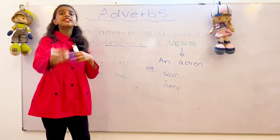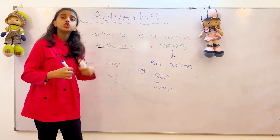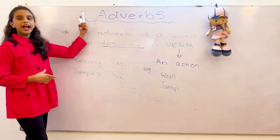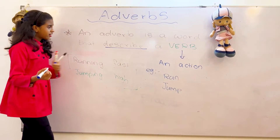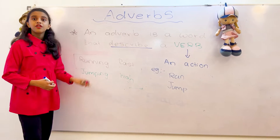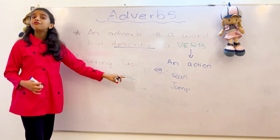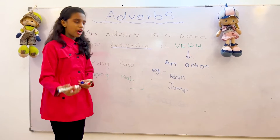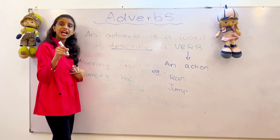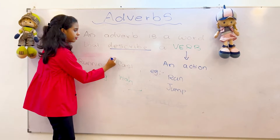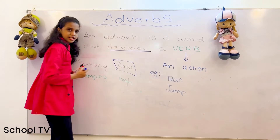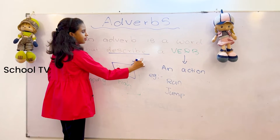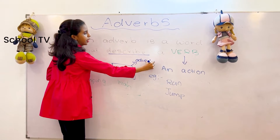So what we use to describe a verb is called an adverb. If we take running, we can say running fast. How is he or she running? Running fast. So what describes the word running? The word fast. So how is he running? Fast. So this is our adverb.